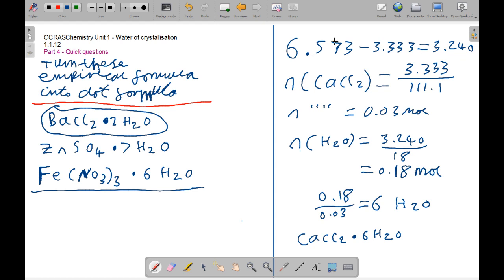And for this one, step by step calculation, 6.573 minus 3.33 gives me the mass of the anhydrous. Then the moles of calcium chloride, 3.333 over 111.1. And then the moles is equal to 0.03. Then the moles of water for this particular one is 0.18. Then 0.18 over 0.03 gives 6. So calcium chloride dot 6H2O.